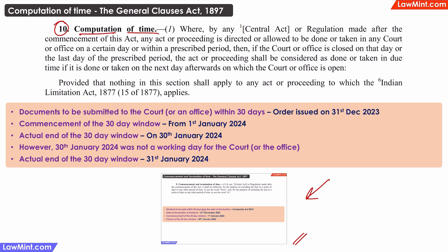For example, a person is required to submit a document to the court or to a government office within 30 days from the date of an order. As per Section 9, the first day in the series is excluded. That is, if the order was issued on the 31st of December, that day is excluded and the 30-day time period starts from the 1st of January. So, the 30th day happens to fall on the 30th of January.